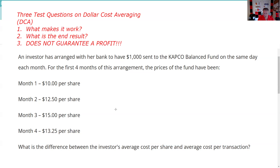What makes dollar cost averaging work? We have fixed dollars — a thousand dollars — invested regularly every month. That's test question number one. Test question number two is: what is the end result? The end result is we're going to have a lower average cost than the average price of the underlying shares, because we're buying more shares when they're low and fewer shares when they're high.